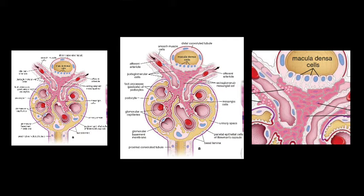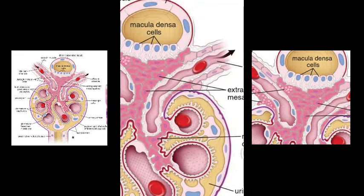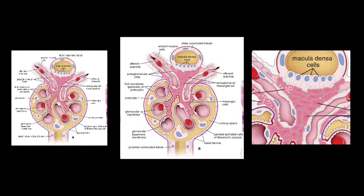Specifically, this is the part between the straight part and convoluted part of the DCT, lying adjacent to the afferent arteriole and efferent arteriole. This part is the continuation of the mesangial cells of the renal corpuscle, known as extraglomerular mesangial cells or lacis cells.